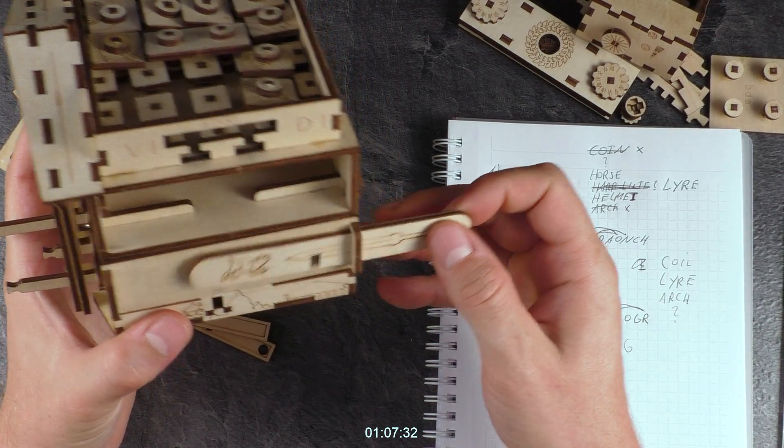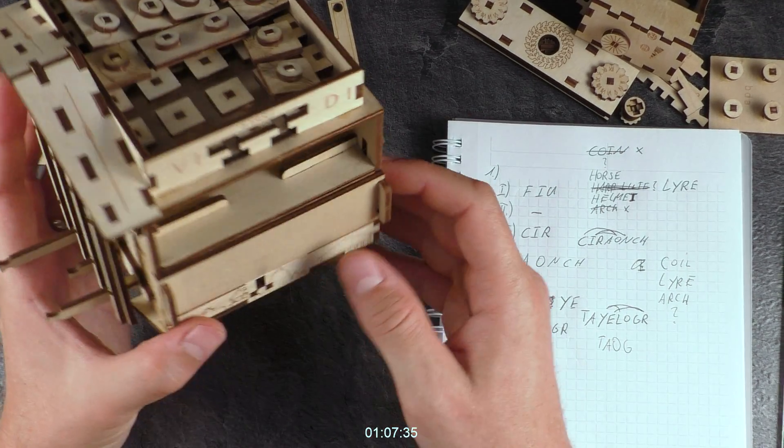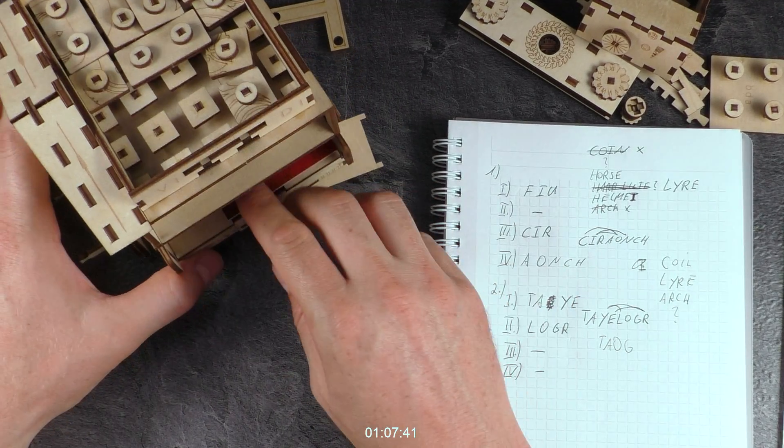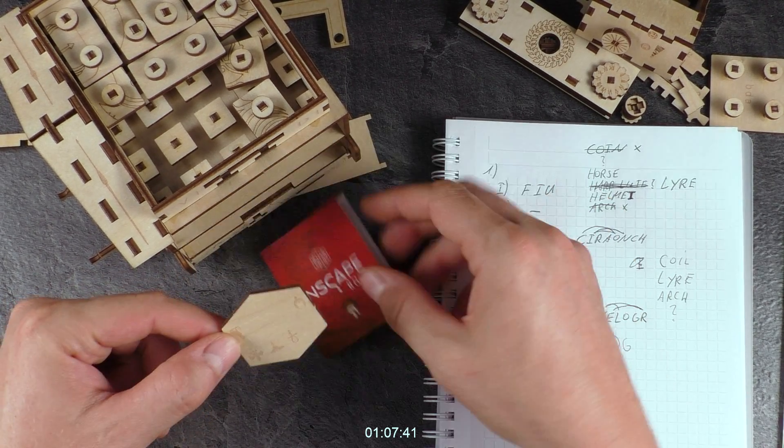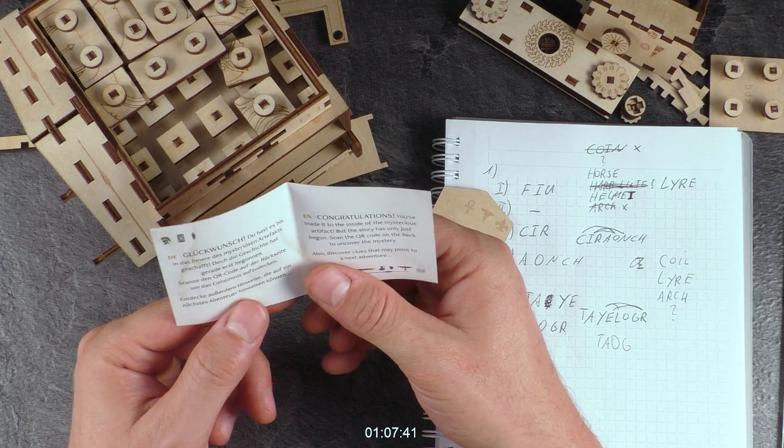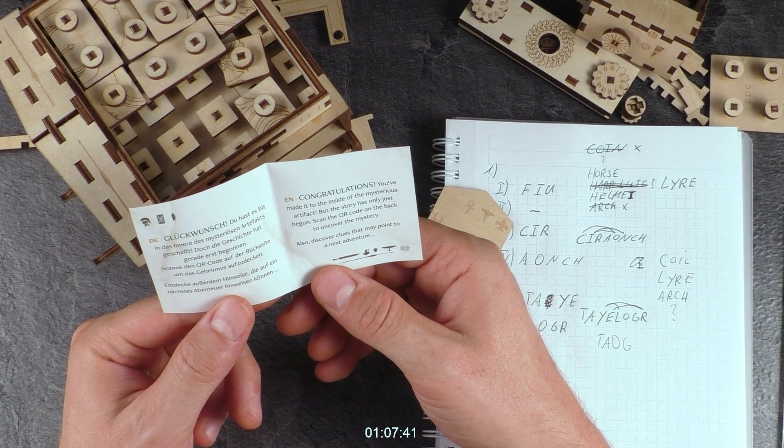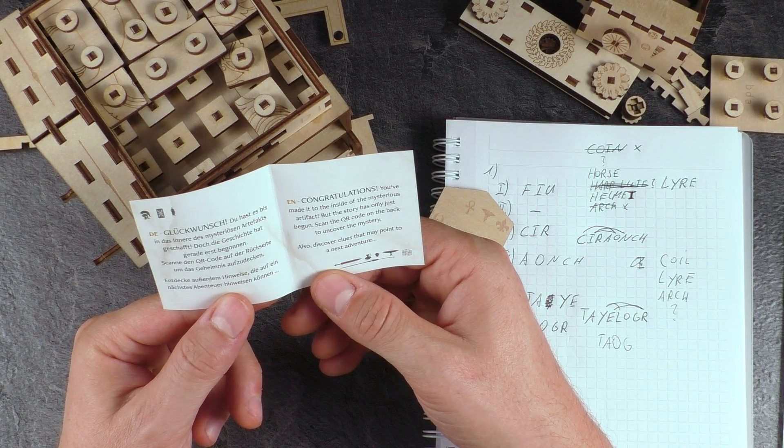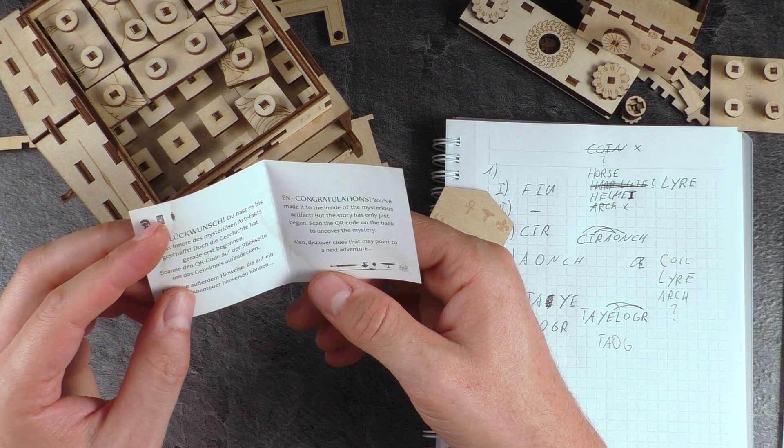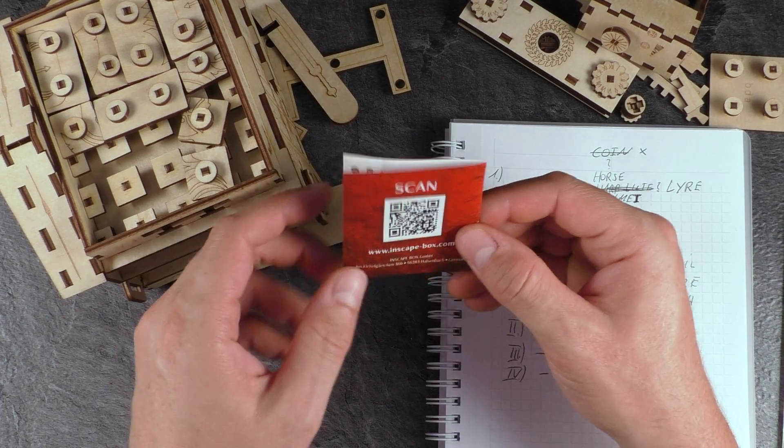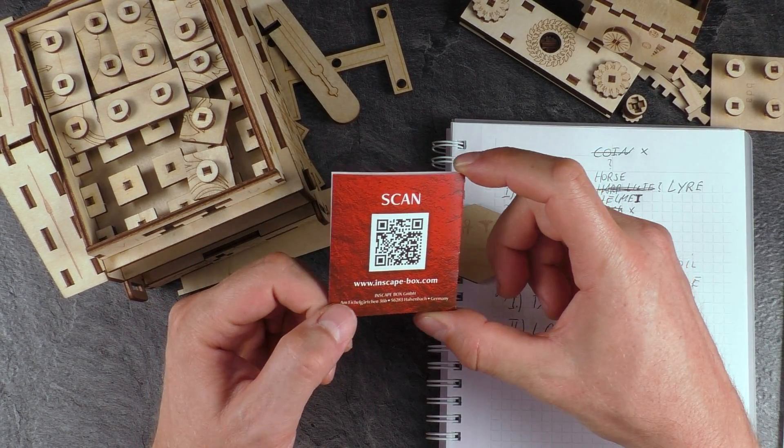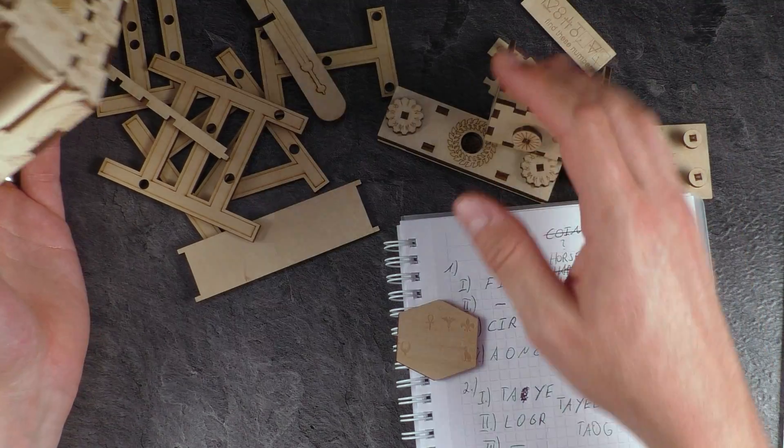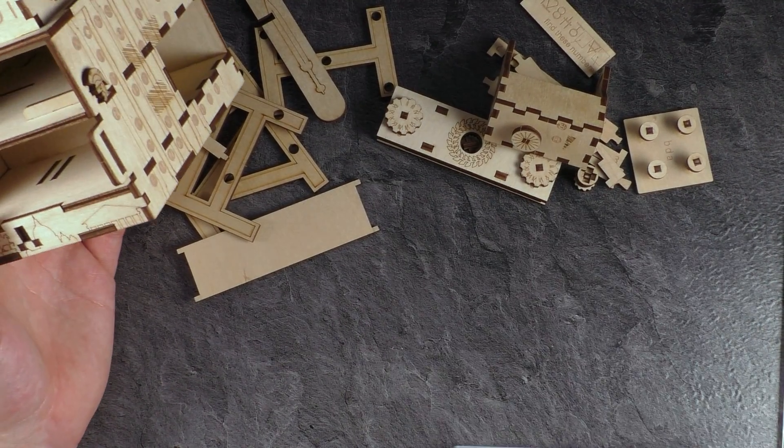Oh, yes. Oh, this was a hard one. This was a hard one. And now, let's see, oh, I'm done. Okay. Congratulations. You made it to the inside of the mysterious artifact. But the story has only just begun. Scan the QR code on the back to uncover the mystery. Also discovered clues that may point to a next adventure. Okay. So if you check this barcode, you get to a page with a small story, and then you can enter your time. And I think my time was around 75 minutes, which is quite fast, if you consider what was written on the box. However, I need to get this thing back together again. I mean, look at this mess on my desk. So conclusion,